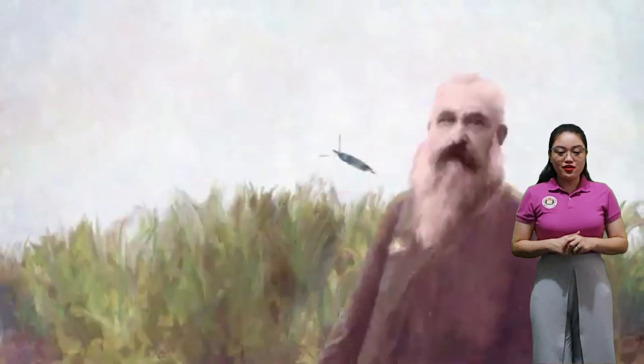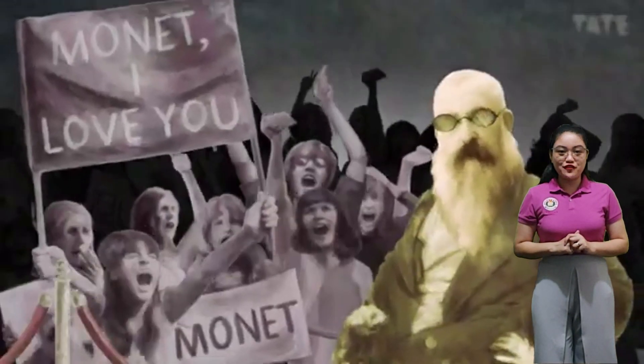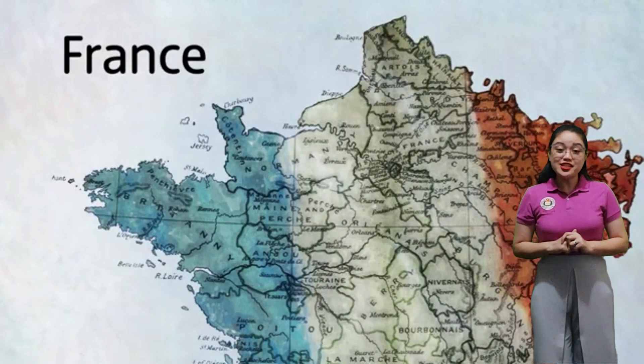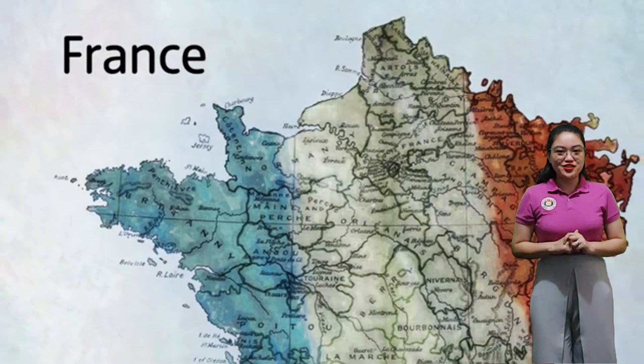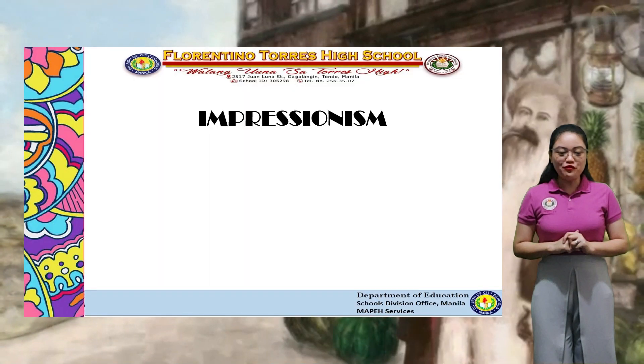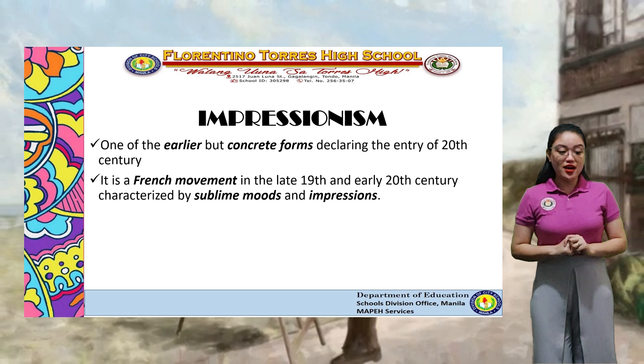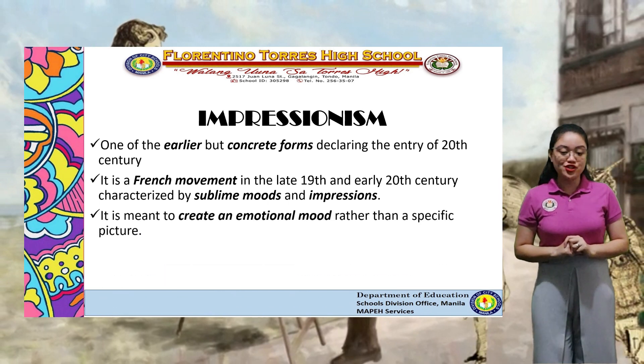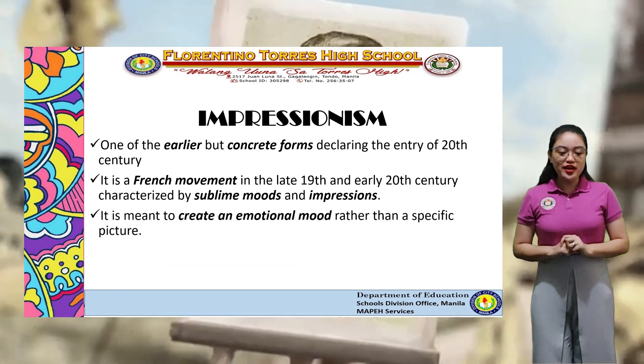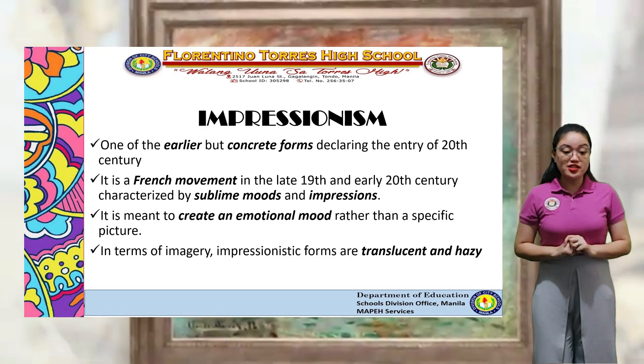One of the earlier but concrete forms declaring the entry of 20th century music is known as Impressionism. It is a French movement in the late 19th and early 20th century characterized by sublime moods and impressions. It is meant to create an emotional mood rather than a specific picture. In terms of imagery, Impressionistic forms are translucent and hazy, as if trying to see through a rain-drenched window.